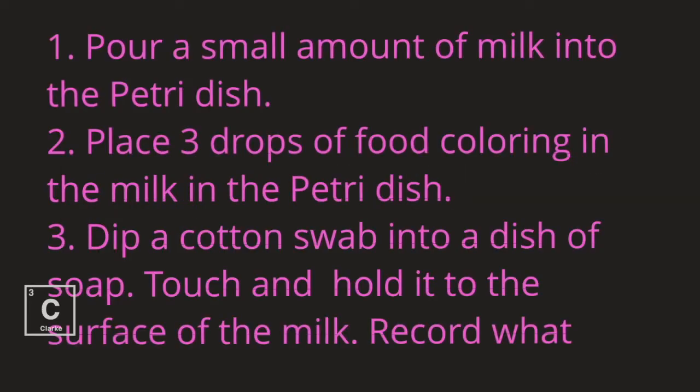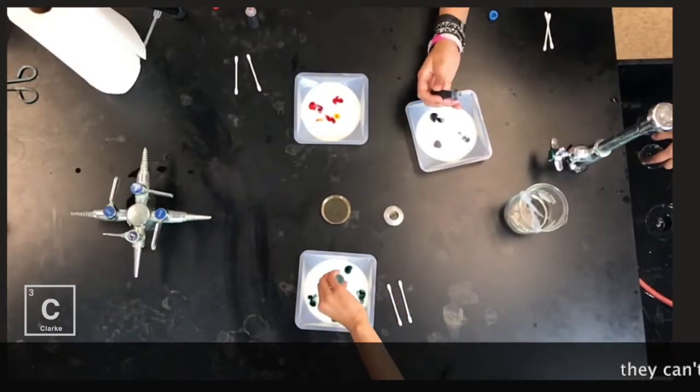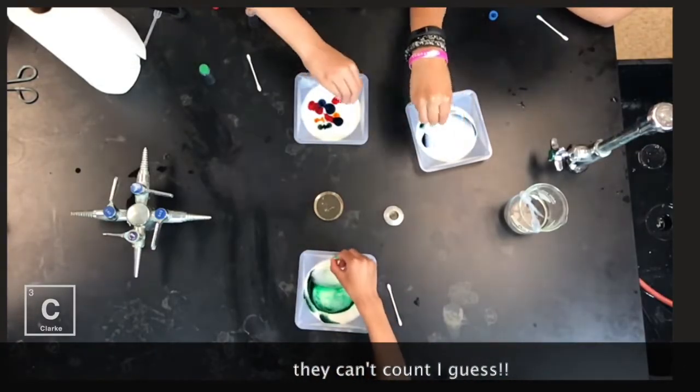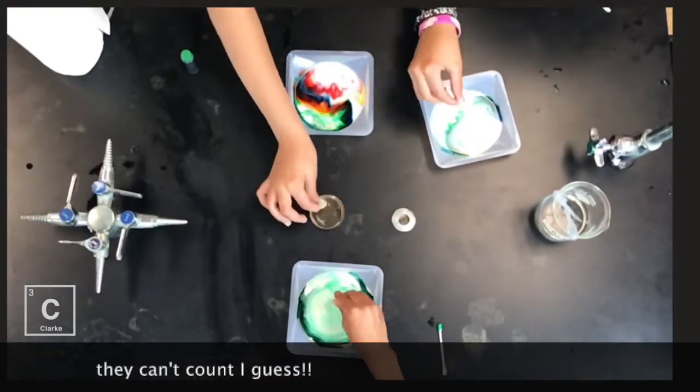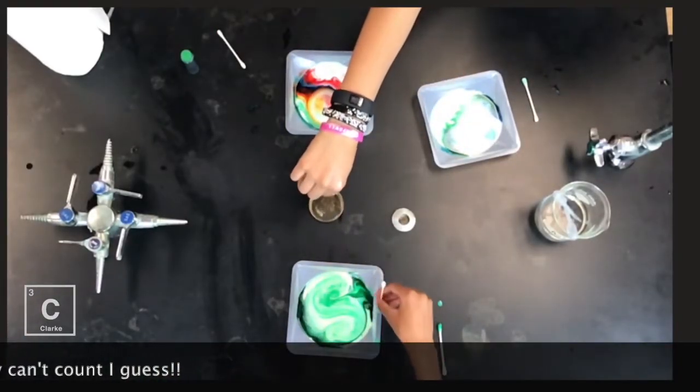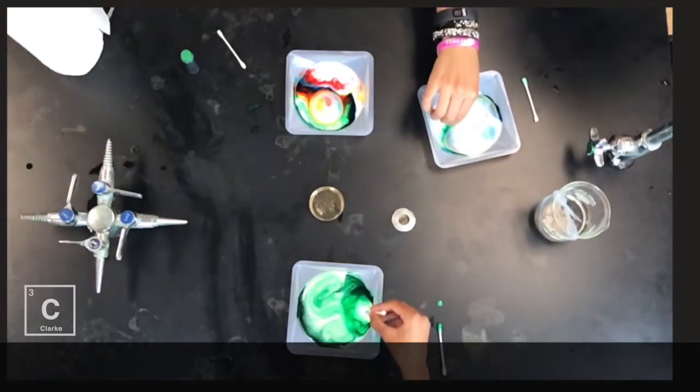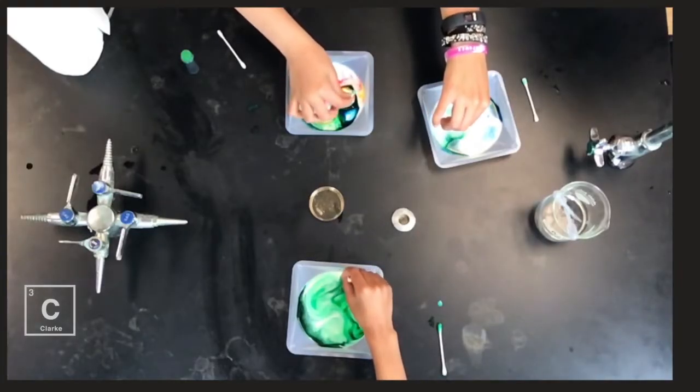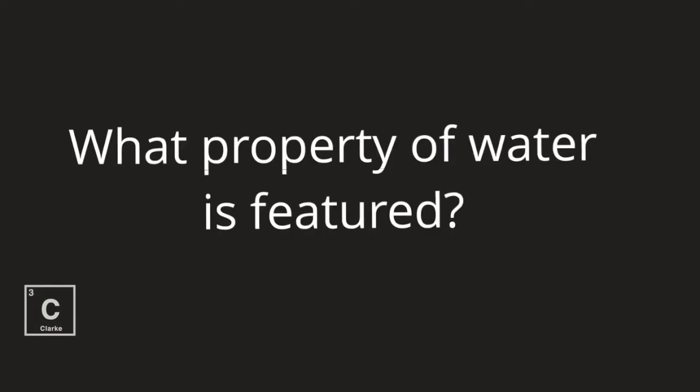Pour a small amount of milk into the Petri dish. Place three drops of food coloring in the milk in the Petri dish. Dip a cotton swab into a dish of soap. Touch and hold it to the surface of the milk. Record what happens. What property of water is featured?